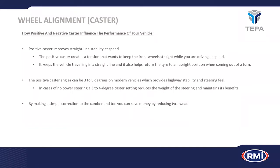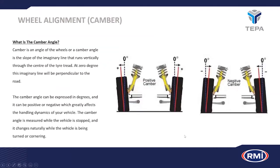Moving on to camber: the camber angle is the slope of the imaginary line that runs vertically through the center of the tire tread. At zero degrees that line is perpendicular to the road. Positive camber pushes the top of the tires outwards from the wheel arch and the bottom inwards, creating a bulge on the outside of the tire where pressure and wear concentrate. Similarly, negative camber causes wear on the inner side of the tire.